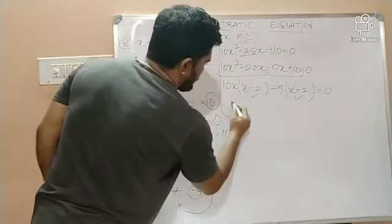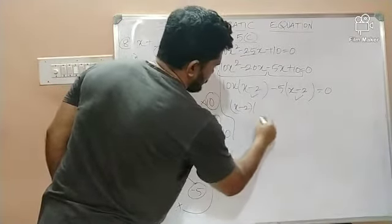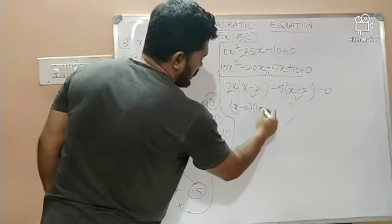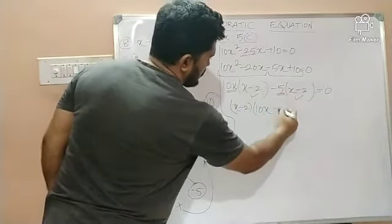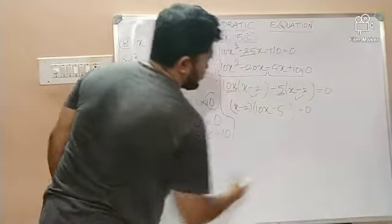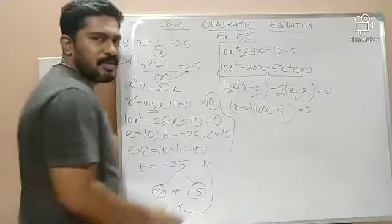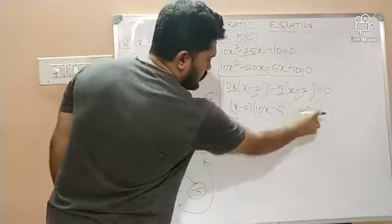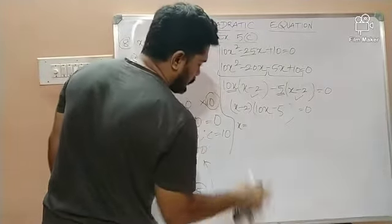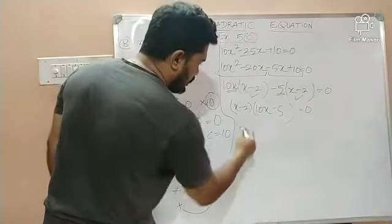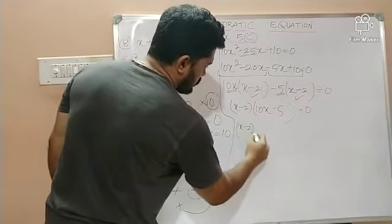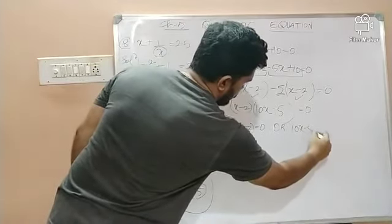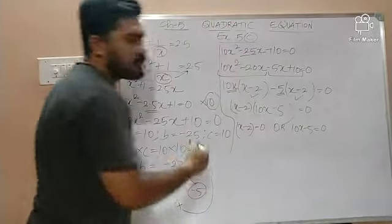Now, children, what is common again? x minus 2. Yes. So, if I take x minus 2 common from these two terms, what is left in the first term? 10x. What is left in the second term? Minus 5, which is equal to 0. So, here, the product of x minus 2 and 10x minus 5 is equal to 0. Therefore, I can say either x minus 2 is equal to 0 or 10x minus 5 is equal to 0.